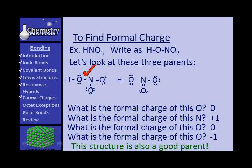This structure is a good parent because the positive charge and the negative charge are adjacent and the others are zero. It could have been better had everything been zero, but let's look at another parent. This next structure just puts the double bond on a different oxygen, and if you check carefully, it has the same spread of charges. It is also a good parent. So now we have two equally good parents.